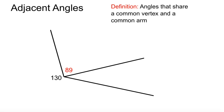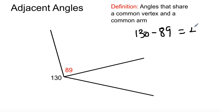Next: adjacent angles. The definition is angles that share a common vertex and a common arm. Here's your vertex, common between this angle and this angle here. This angle here is 130 degrees — the whole thing. This angle here, just under 90, is 89. So you say 130 minus 89 will give you 41. So this angle here is 41 degrees. Adjacent angles share a common vertex and a common arm, and that's how you find the missing angle — just subtract from what you have.